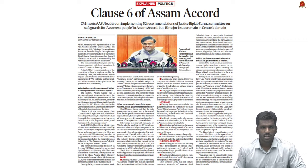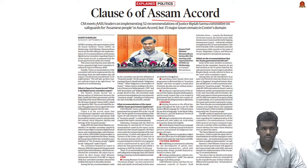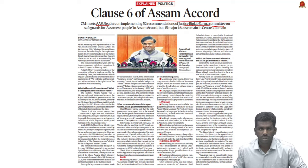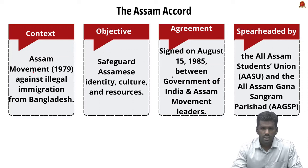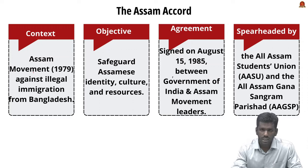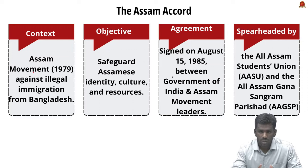The second article is about the Assam Accord. Recently, the Chief Minister of Assam met the All Assam Students' Union and agreed that Justice Biplob Sharma Committee recommendations will be implemented. These recommendations are related to the Assam Accord. The Assam Accord is a pivotal agreement signed on August 15, 1985 between the Government of India and leaders of the Assam movement.